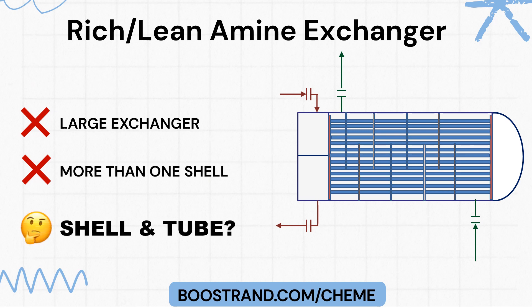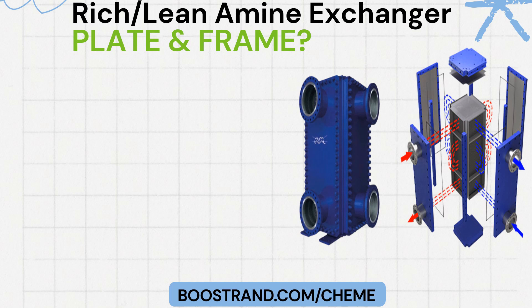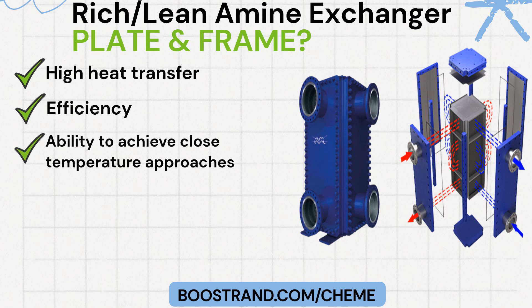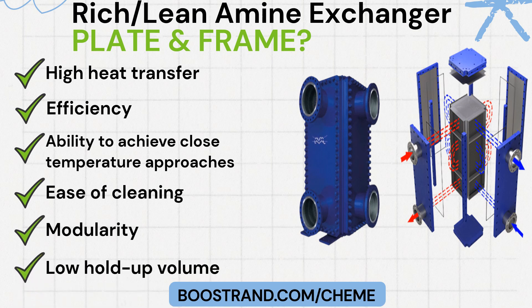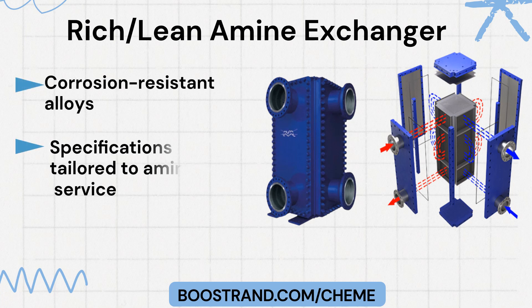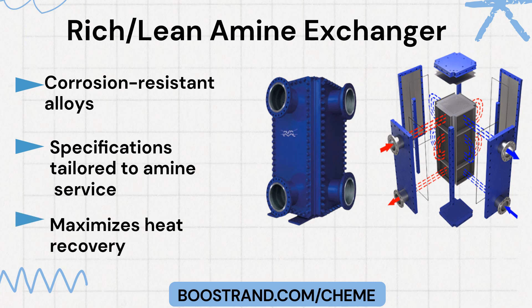That's why shell and tube exchangers may not be the most suitable option for this service. Plate and frame heat exchangers are well suited for amine service because of their high heat transfer efficiency in a compact design, ability to achieve close temperature approaches, ease of cleaning, modularity, and low hold-up volume. They are typically made of corrosion-resistant alloys with specifications tailored to amine service, like corrugated plates to induce turbulence, and the flow configuration maximizes heat recovery between the streams.